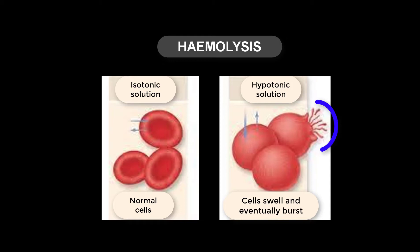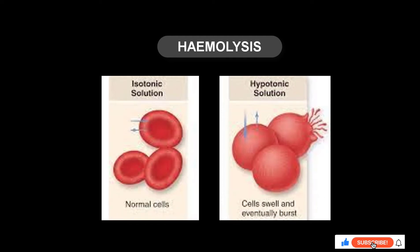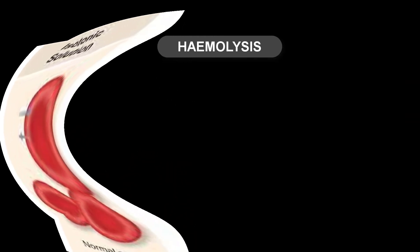The reason they burst is that they only have the cell membrane — they don't have a cell wall. The cell membrane they have is very soft and cannot withstand the pressure generated as a result of absorbing too much water. That process whereby they burst is referred to as hemolysis.